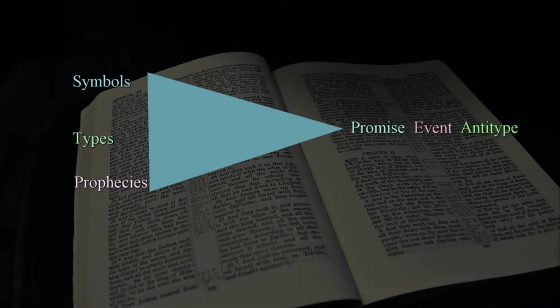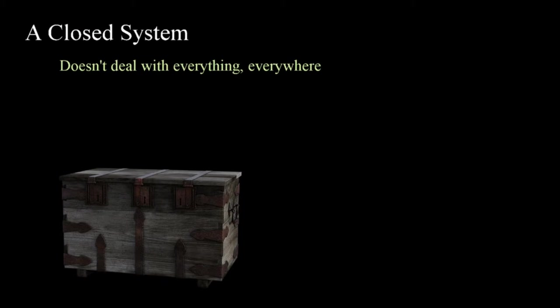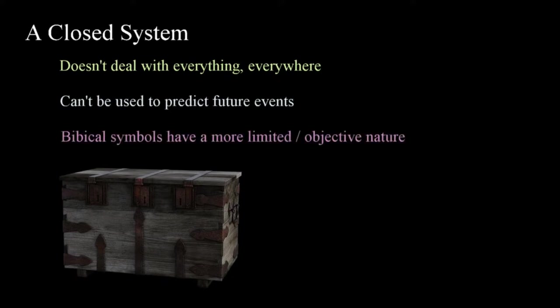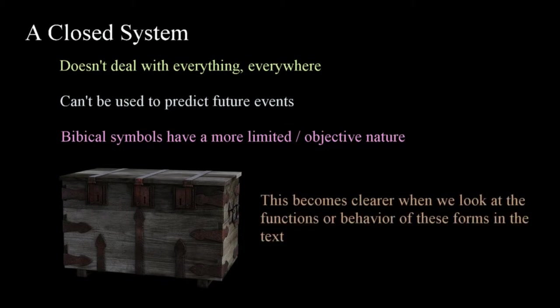These things form limits on how we should interpret anything in the Bible. The Bible is a closed system — it doesn't deal with everything that happens everywhere in the world and certainly can't be used to predict what will happen in the next year or century. The nature of symbolism in the Bible has a more limited and objective nature than what some think it does. This is made even clearer when we look at the functions or behavior of symbolic forms in the text.